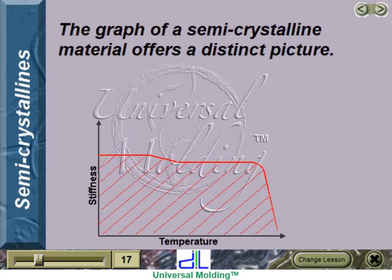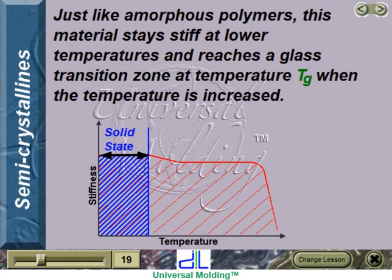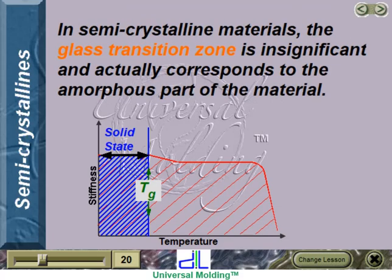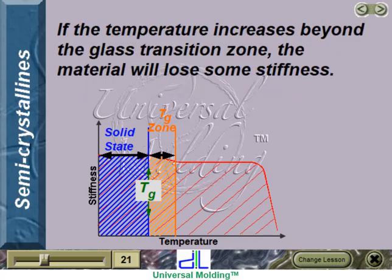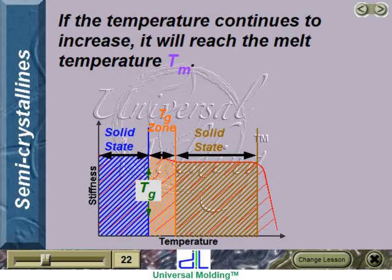The graph profile of a semicrystalline polymer shows that at certain low temperatures, this type of material stays in a solid state. Just like amorphous polymers, it stays stiff at lower temperatures and reaches a glass transition zone at temperature Tg when the temperature is increased. However, when discussing semicrystalline materials, it is not common to use the term Tg, as the glass transition zone is insignificant and corresponds only to the amorphous part of the material. If the temperature increases beyond the glass transition zone, the material will lose some stiffness but still remain in a solid state. If the temperature continues to increase, it will reach the melt temperature, Tm.